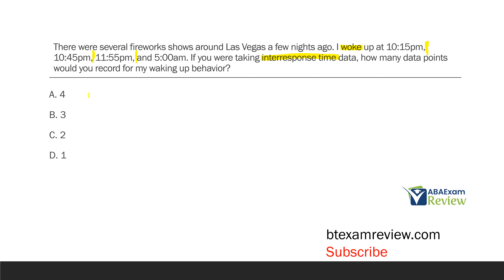Our answer is going to be three. Looking at A, four — if you were counting how many times I woke up and looking for frequency, you might choose four. B is our answer: three inter-response time data points. Two wouldn't apply here. If you're looking at latency, you'd likely have one data point — the time between the firework and waking up. But what we're looking at is time in between waking up, which is inter-response time. Measurement of inter-response time starts at the end of the first response to the beginning of the second — one data point, two data points, three data points.